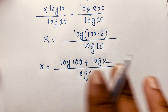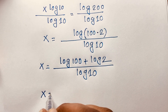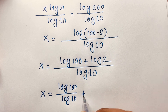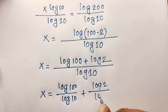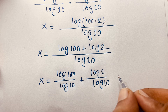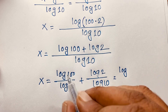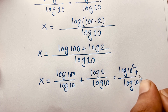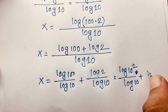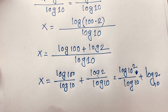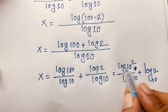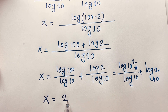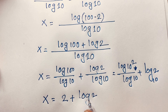If I separate this fraction, it will be x is equal to log 100 divided by log 10, plus log 2 over log 10. Now, 100 is 10 to the power 2, so log 100 divided by log 10 gives 2, and log 2 over log 10 is log 2 base 10. So we find out x is equal to 2 plus log 2 base 10.